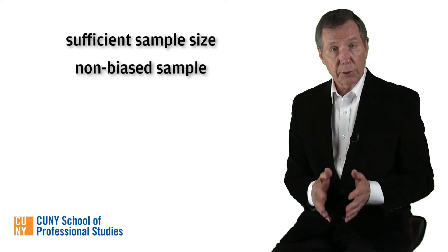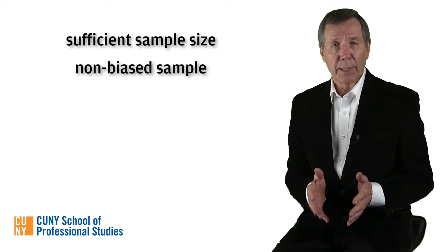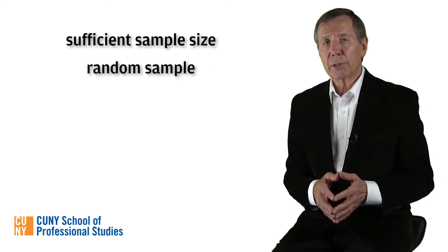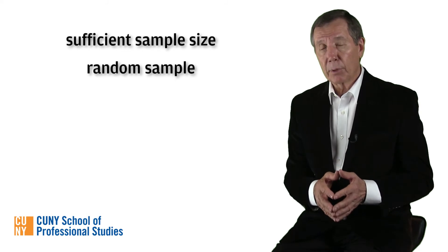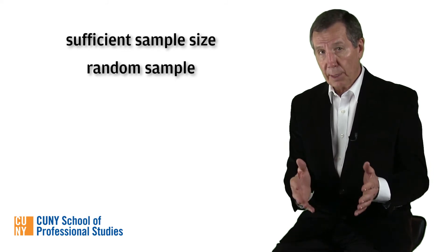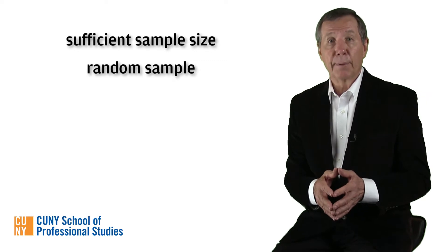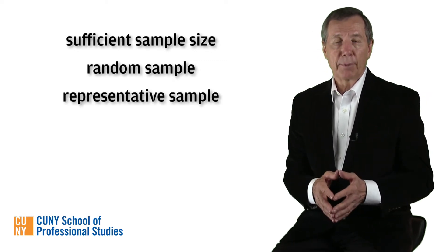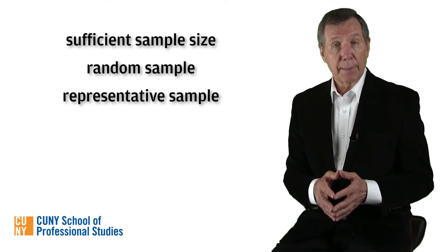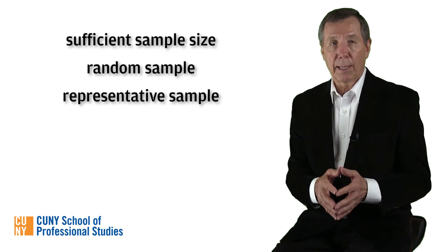Second, the sample must not be biased. Ideally, the sample will be randomly selected, which simply means that each member of the subset of the total population has an equal probability of being included in the sample. And third, the sample must be representative, which means that the sample reflects the characteristics of the total population.